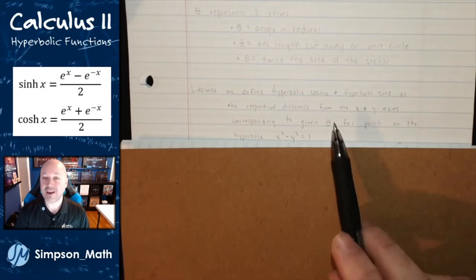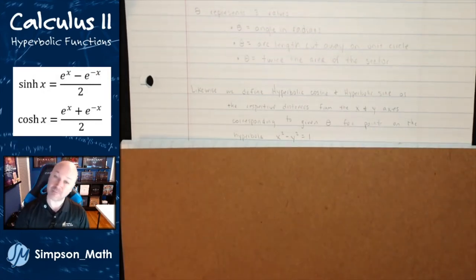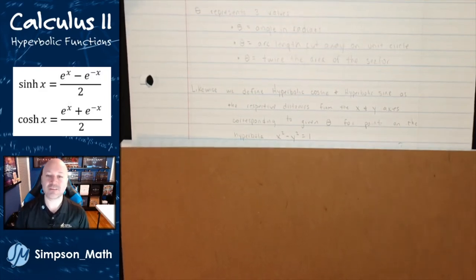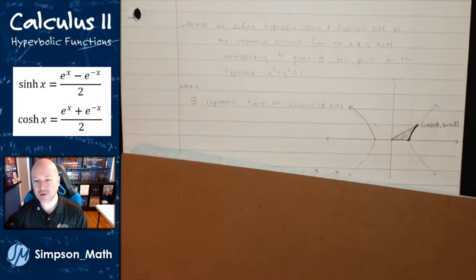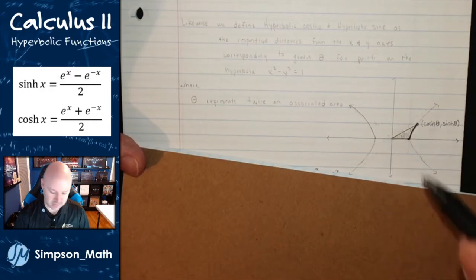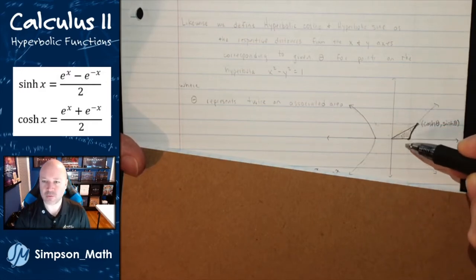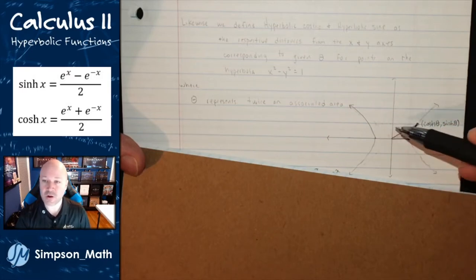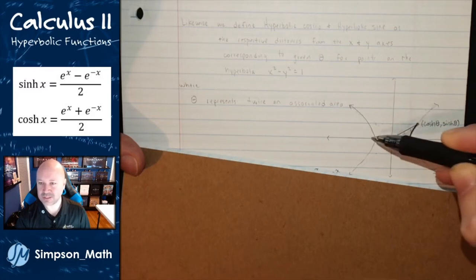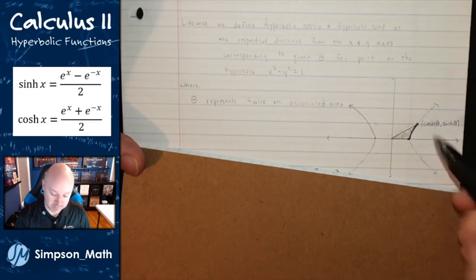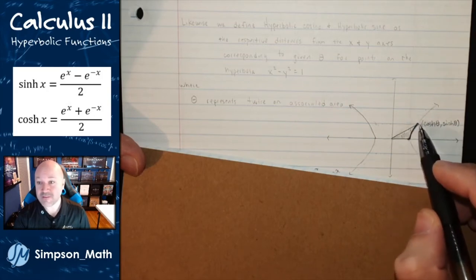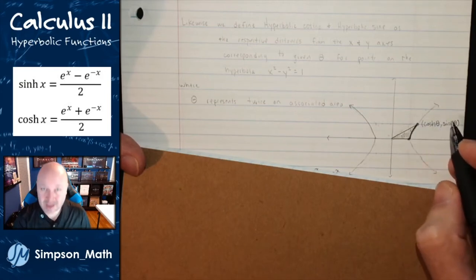Likewise, we define hyperbolic cosine and hyperbolic sine as the respective distances from the x and y axes corresponding to some given angle theta, for points on the hyperbola x² - y² = 1. The unit hyperbola — instead of drawing a circle with radius 1, you draw a fundamental square from the center of the hyperbola up 1 and right 1. Every point on the hyperbola has an x value that is hyperbolic cosine of that given angle and a y value that is hyperbolic sine of that given angle.